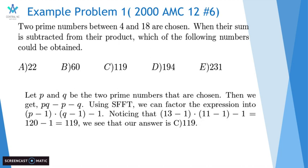Let p and q be the two prime numbers that are chosen. Then we get pq minus p minus q. Using Simon's favorite factoring trick, we can factor the expression into p minus 1 times q minus 1 minus 1, because it's the extra one we get when we multiply negative 1 squared.